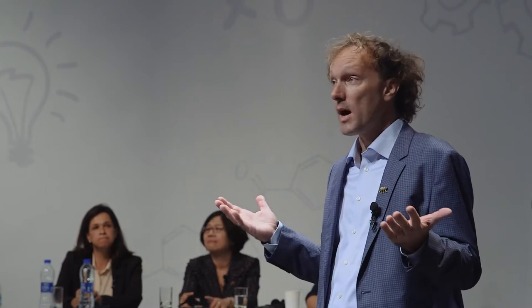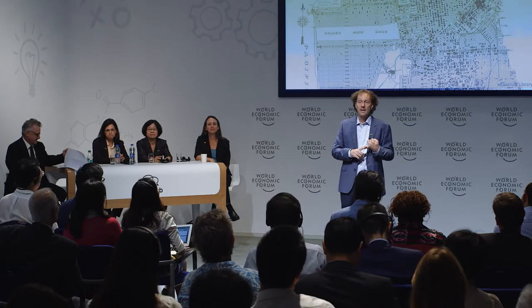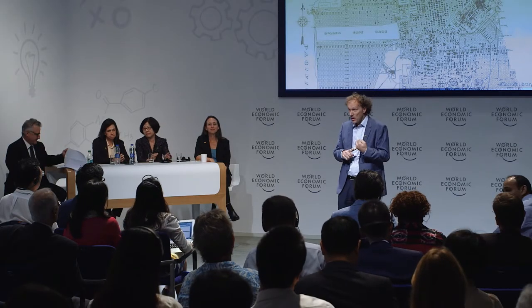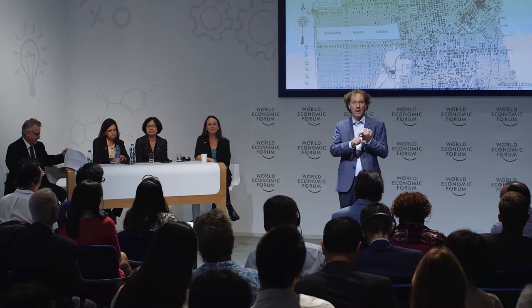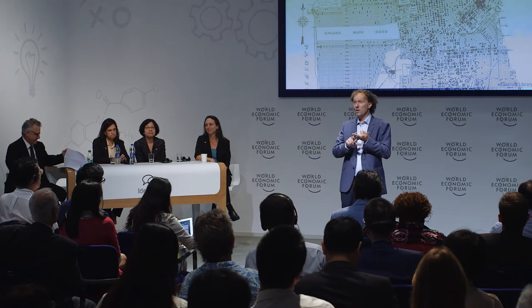Even in California in the early 1900s, tuberculosis was a major problem. Each of the black dots on this map shows cases of tuberculosis. But through better understanding of the epidemiology of tuberculosis, better care, and better ability to diagnose the disease, it's been eradicated.